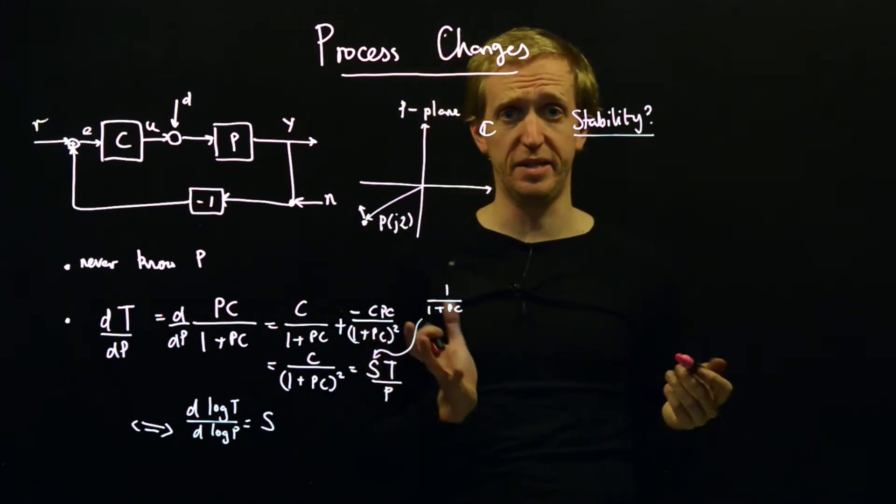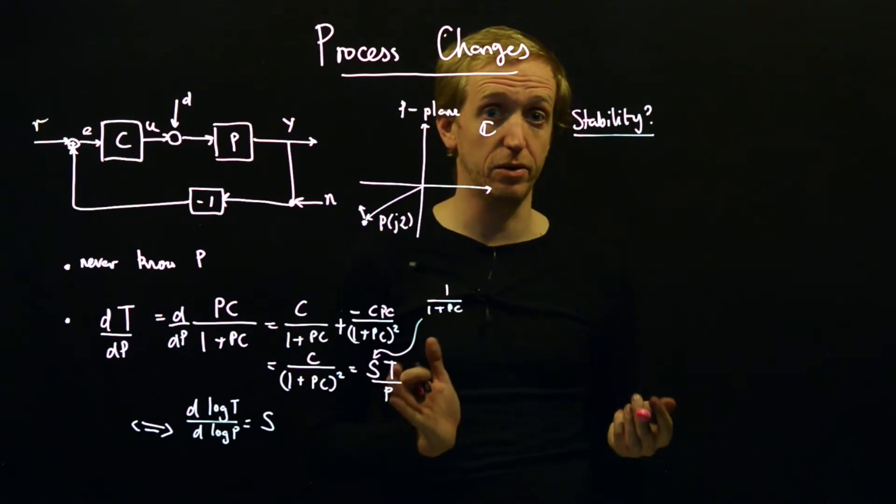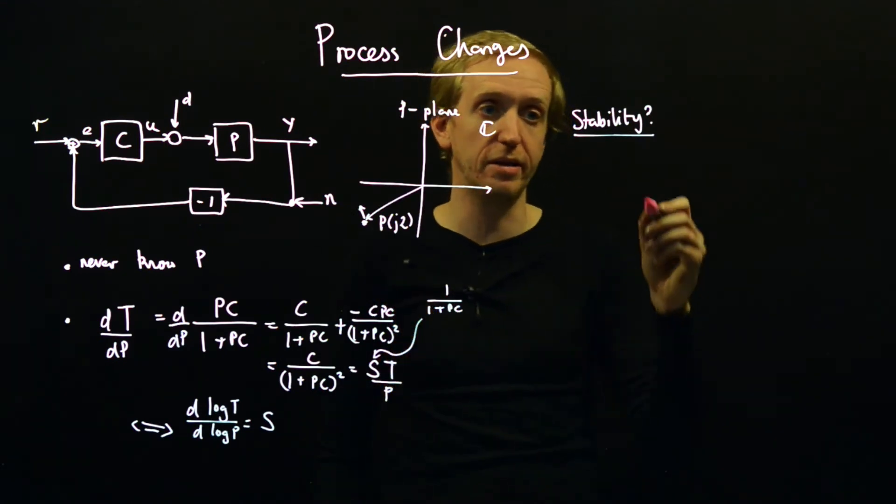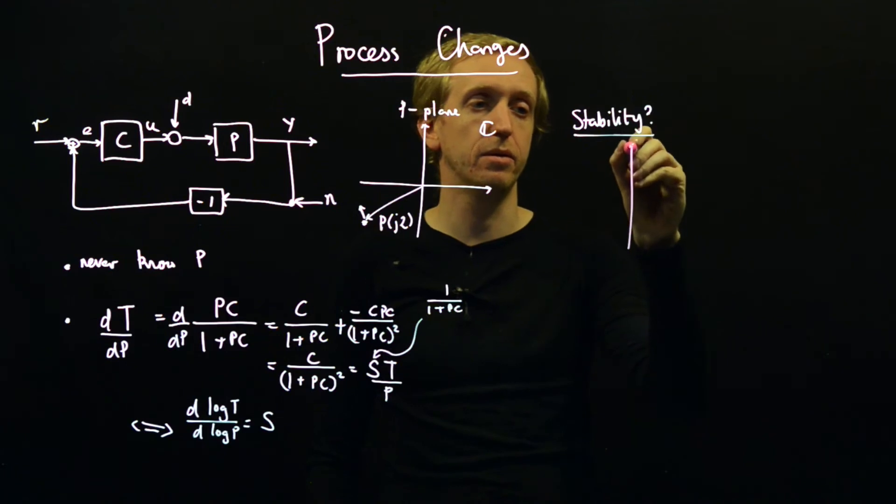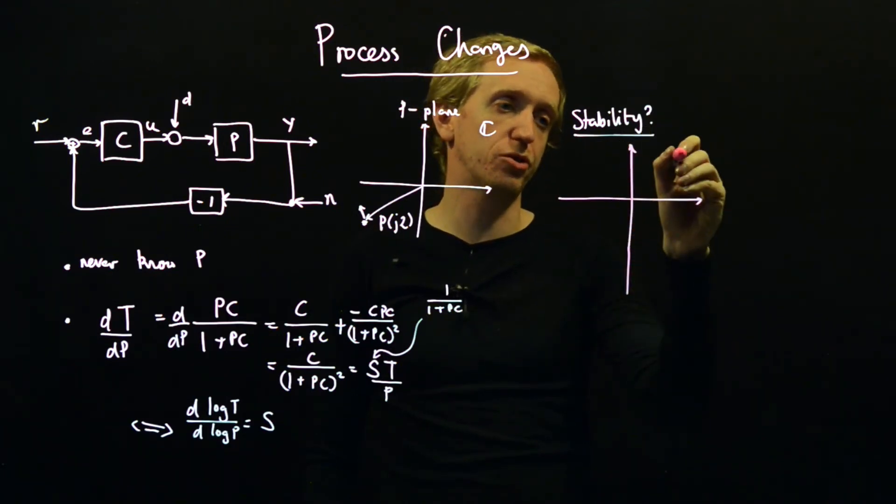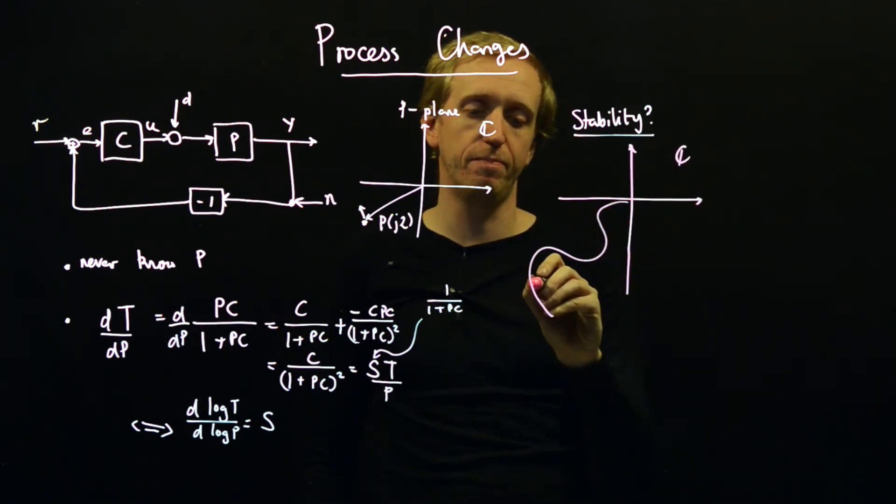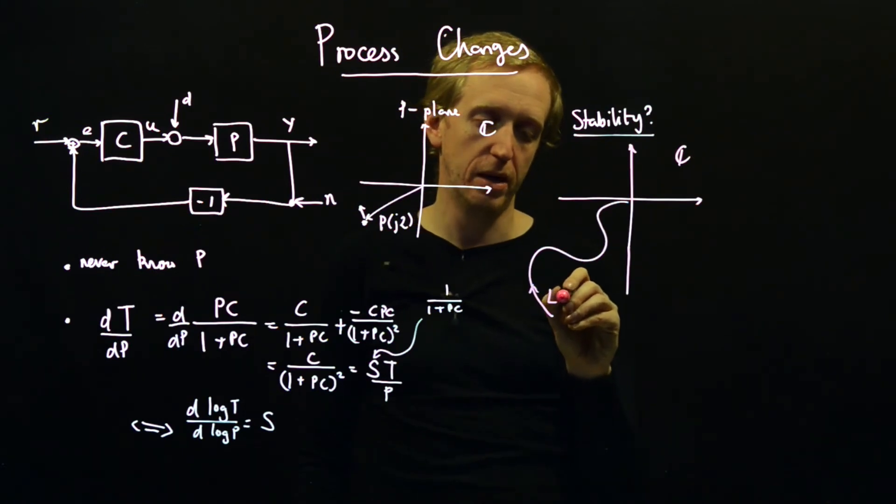We've also seen on these Nyquist plots that things eventually, as it is typically at higher frequencies, the response of your plant gets, well all of these transfer functions are going into the origin and now we've got to start worrying about encirclements with the minus one point and stability properties. So let's try and get a handle on that perhaps. Stability. How could we go about understanding this?